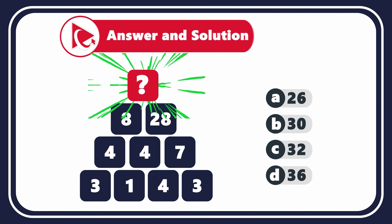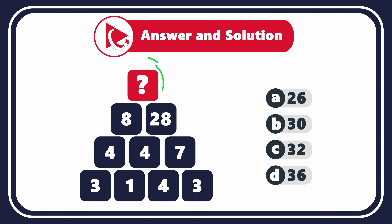You need to determine the missing number located on the top of the pyramid. The other numbers in the pyramid are 8 and 28 in the second row; 4, 4, and 7 in the third row; and 3, 1, 4, and 3 in the fourth row.